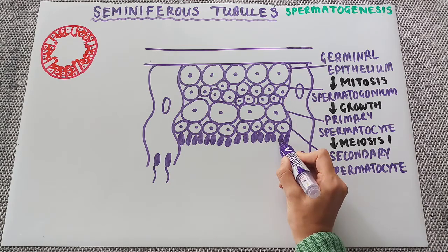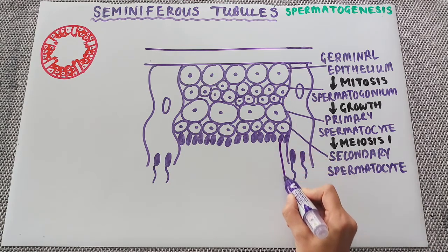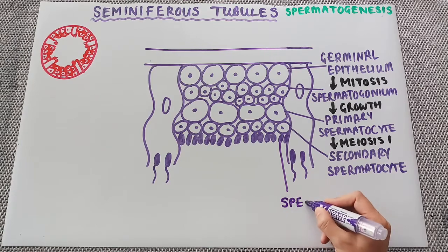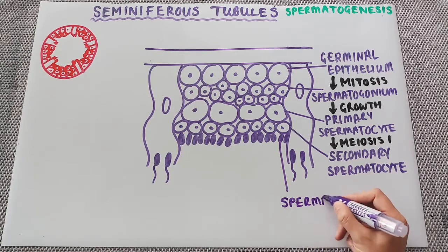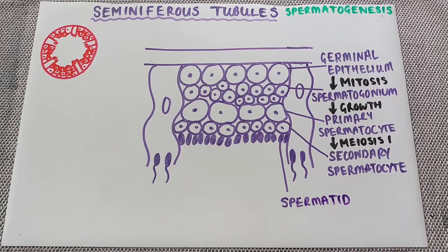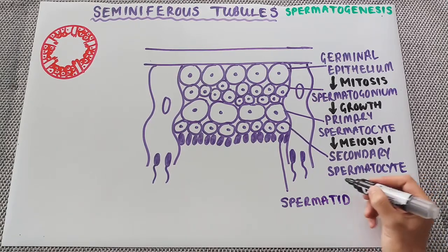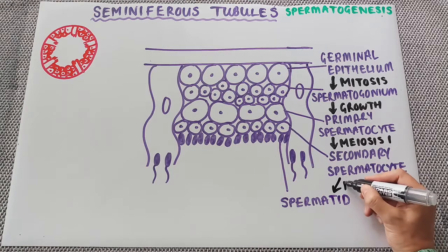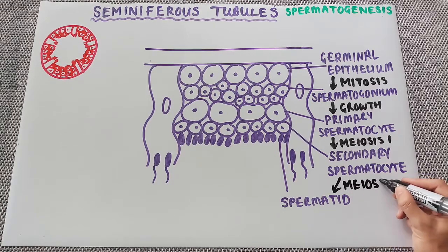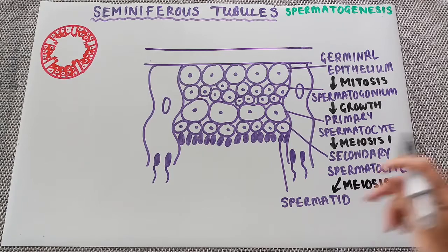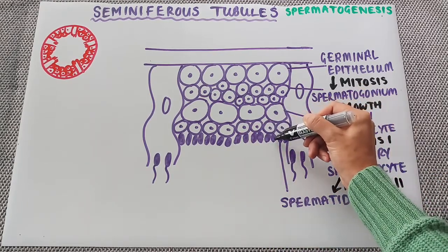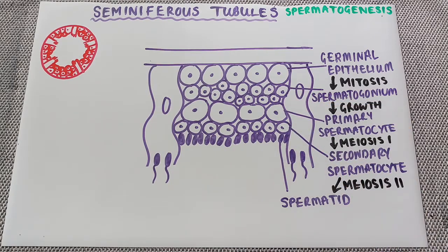These smaller cells down here are then spermatids, and these are formed through the second division of meiosis. Again, there are no polar bodies formed here. Each secondary spermatocyte forms two spermatids through the process of meiosis II.